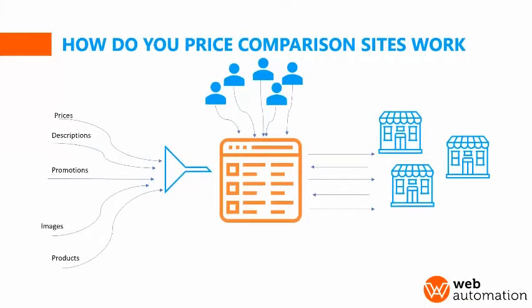So how do price comparison sites work? Essentially what comparison sites do is they aggregate information around prices, products, descriptions, and pictures, and put everything into a very nice user-friendly aggregated view for users to be able to compare prices across multiple retailers, brands, and suppliers. Typically the websites would have a relationship with the different suppliers where they get an exchange of money in return for promoting those products.